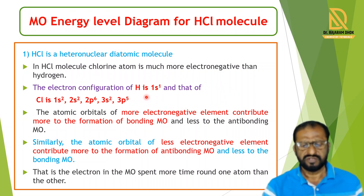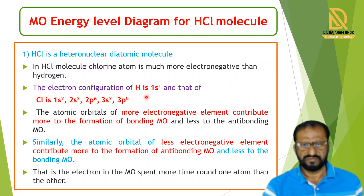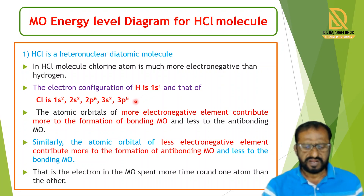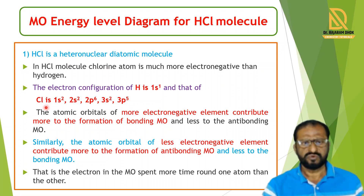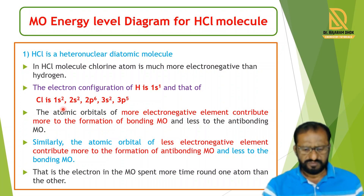The electronic configuration of hydrogen is 1s¹, so only one electron is present in the hydrogen atomic orbital. The atomic number of chlorine is 17, so the electronic configuration of chlorine is 1s², 2s², 2p⁶, 3s², 3p⁵.